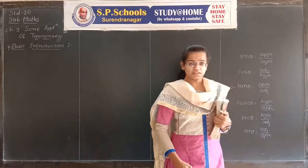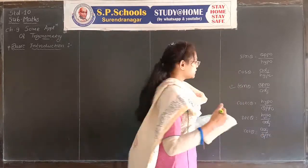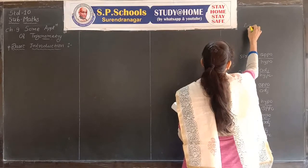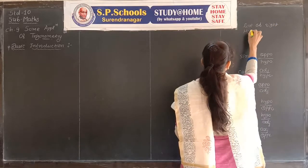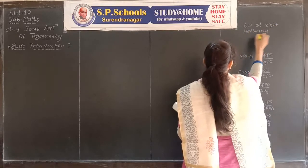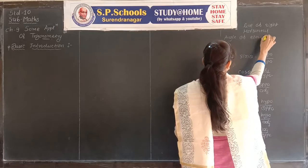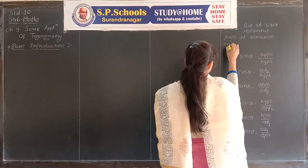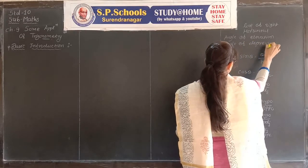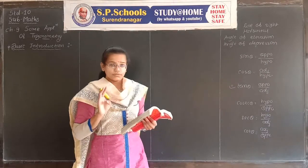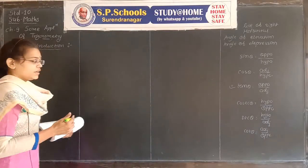Now we discuss some basic terms. Four words are important in this chapter: line of sight, horizontal, angle of elevation, and angle of depression. These four words are most important in this chapter.